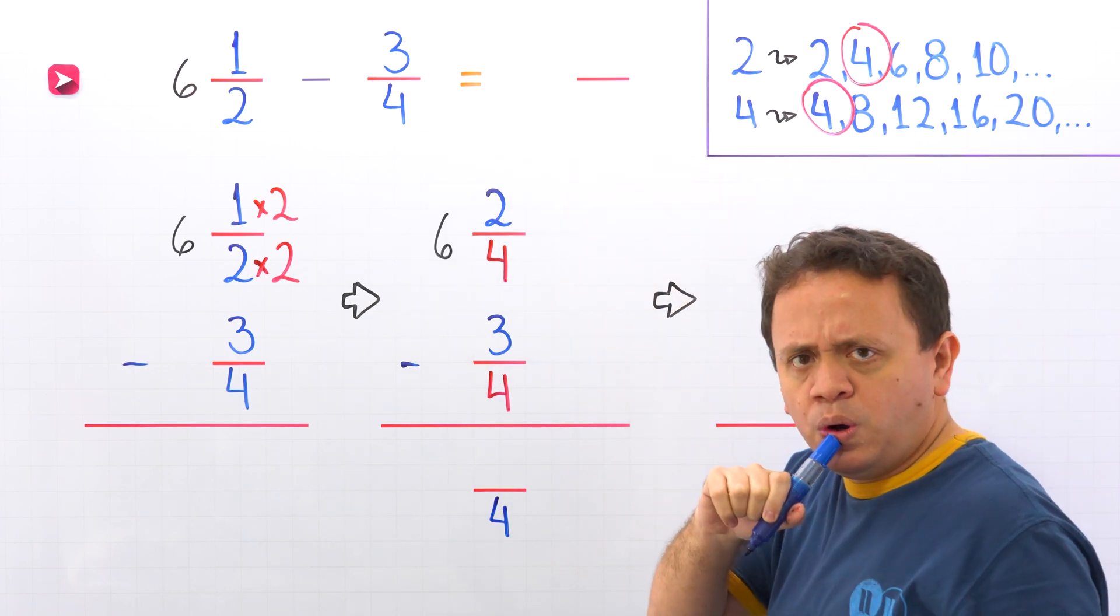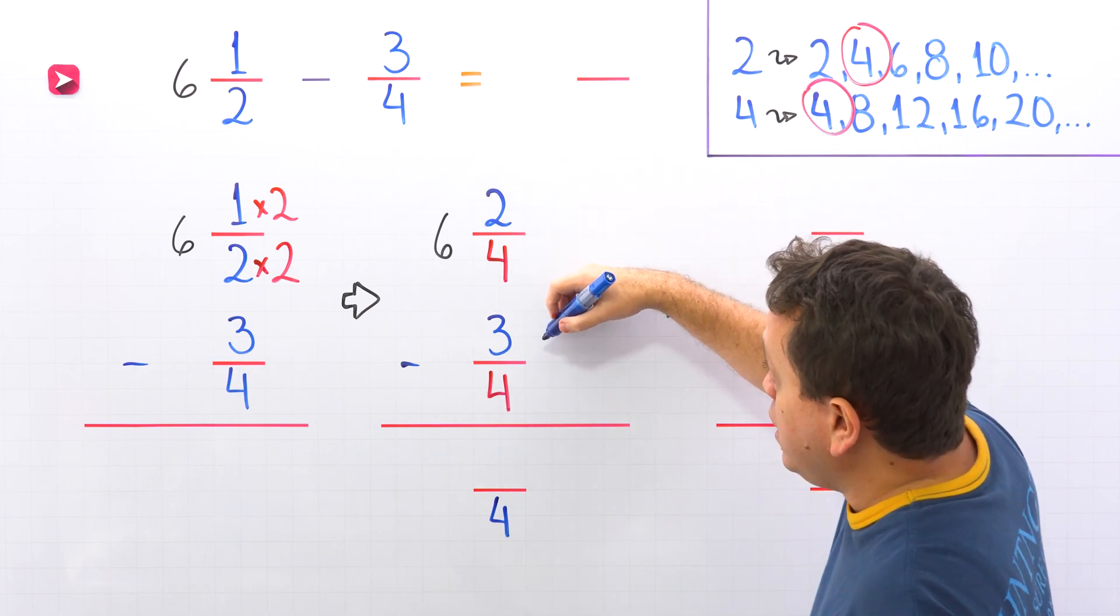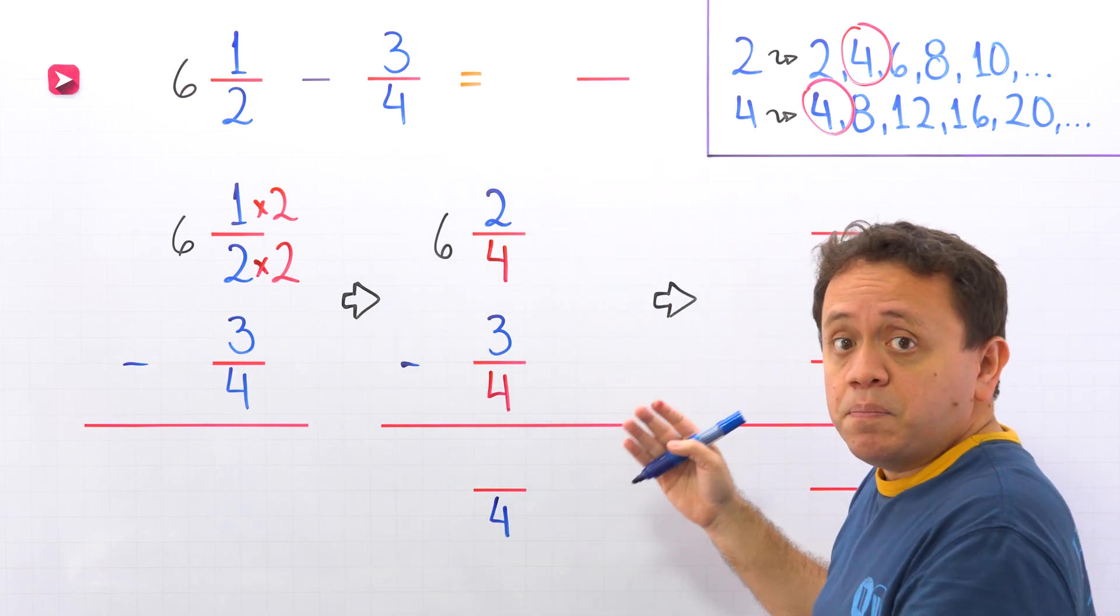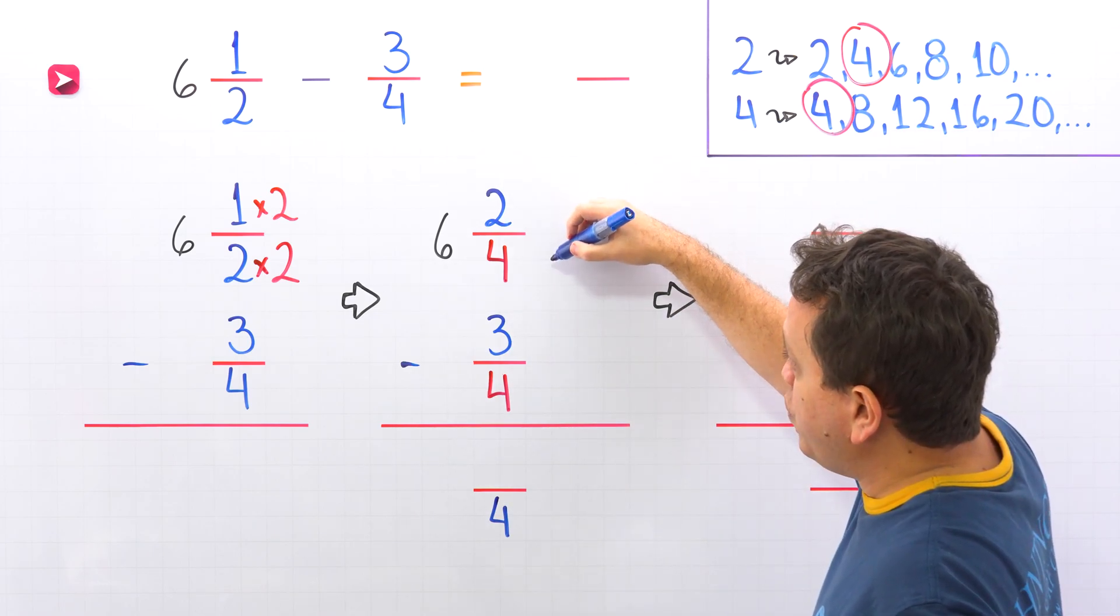2 minus 3. Hold on. 2 minus 3? We cannot subtract 3 from 2, because 3 is bigger than 2. The problem in this case is that the second fraction, 3/4, is greater than the first one, 1/2.